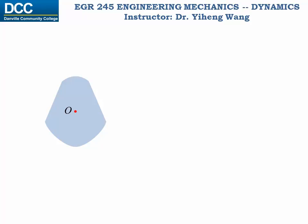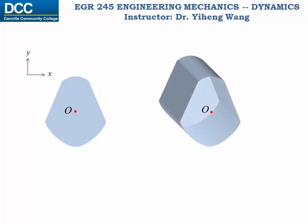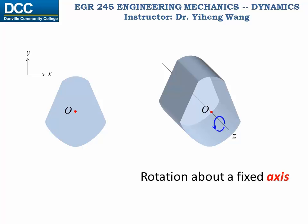For rigid body planar motion, rotation is limited within the x-y plane. Although it looks like rotation is only about a fixed point O in this plane, in reality rotation occurs about a z-axis that passes through point O and is perpendicular to the x-y plane. Therefore this is known as rotation about a fixed axis.